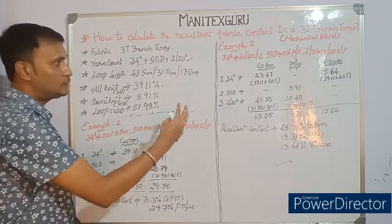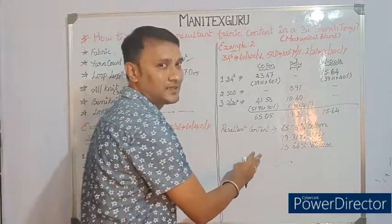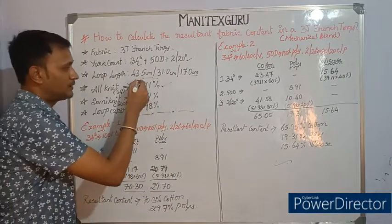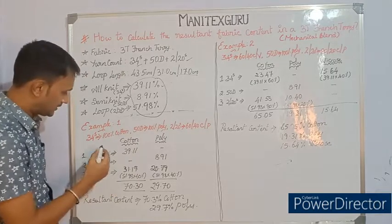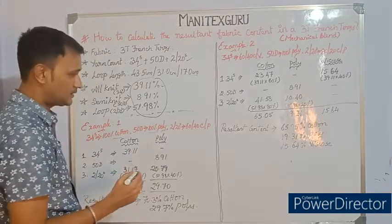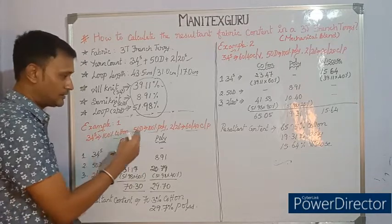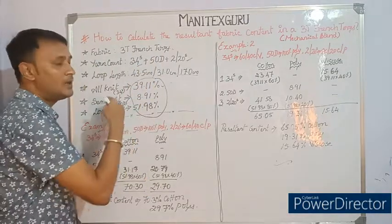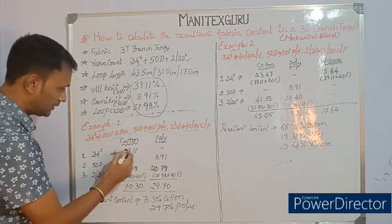To find the resultant fabric content, I have provided two different examples. The first is a cotton-polyester mechanically blended fabric, and the second is a tri-blend. In Example 1, the all-knit 34s count is 100% cotton, the semi-knit 50 denier yarn is 100% polyester, and the back-side looper 2/20s is a 60/40 cotton-polyester blend. Let's calculate the resultant fabric content using these yarn compositions and their percentage contributions.